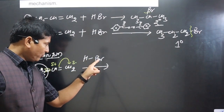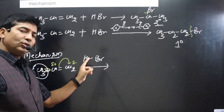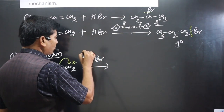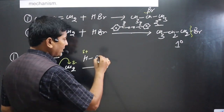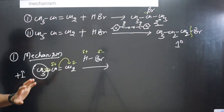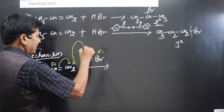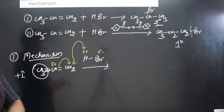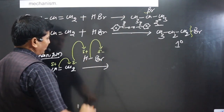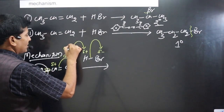Also note that Br is more electronegative than hydrogen, so it has a greater tendency to pull electrons. When Br pulls electron density from H, hydrogen gets a partial positive charge and Br gets a partial negative charge. The electron-rich carbon donates electron density to the electron-poor hydrogen. Since hydrogen cannot form more than one bond, Br being more electronegative pulls the electron density, completing the first step of the reaction.